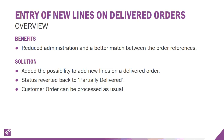A new capability allows entry of new lines on delivered orders. Previously, if an order was already shipped and the customer sent a revision adding a line to that PO, you would have had to create a new customer order. Now we have the possibility to add new lines on a delivered order — when you do that, the status rolls back to partially delivered and you process as normal. This really improves the process and is more aligned with what happens in reality.